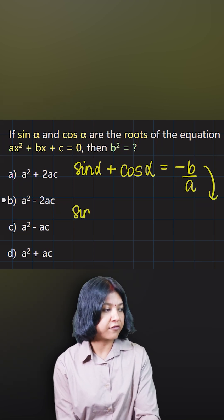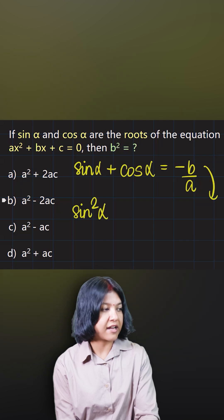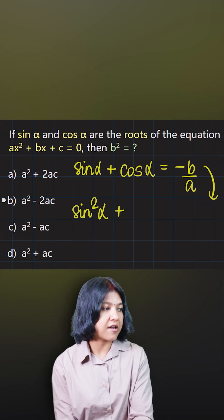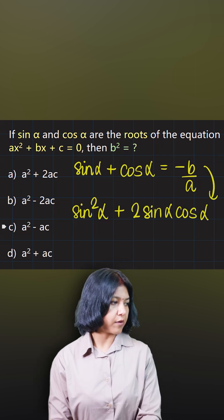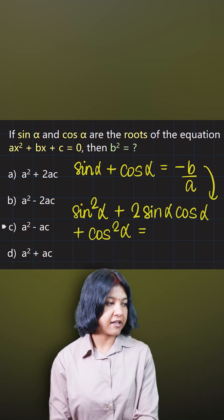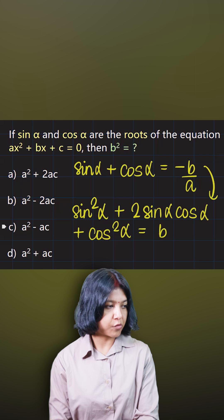If I do that, I'll get the first term as the square of sin α, which is sin² α, plus 2 sin α cos α, and then cos² α. Upon squaring the other side, I get b² upon a².